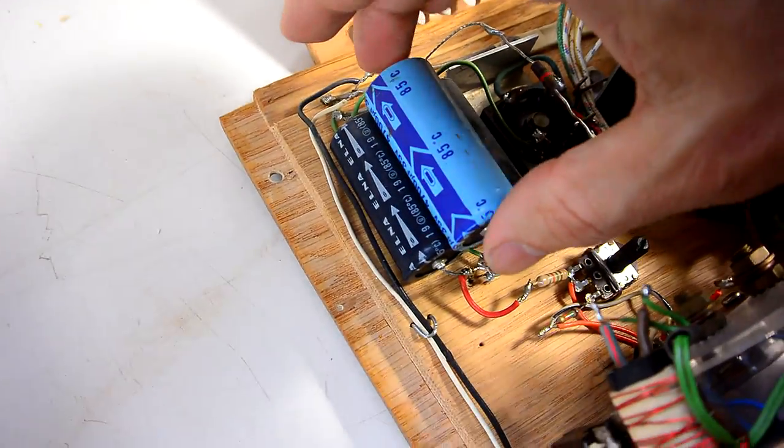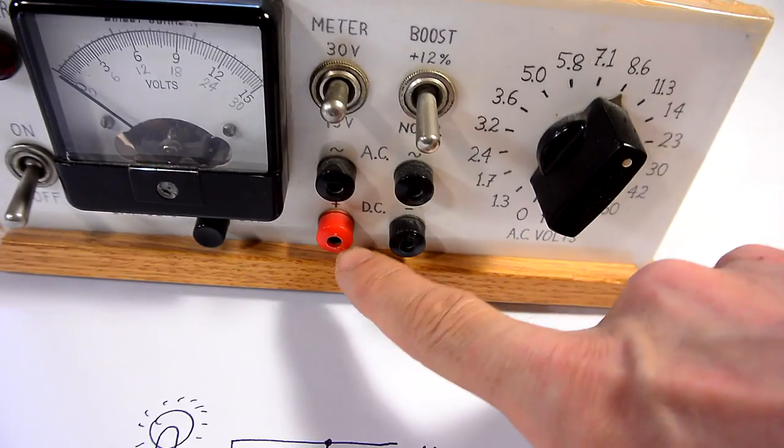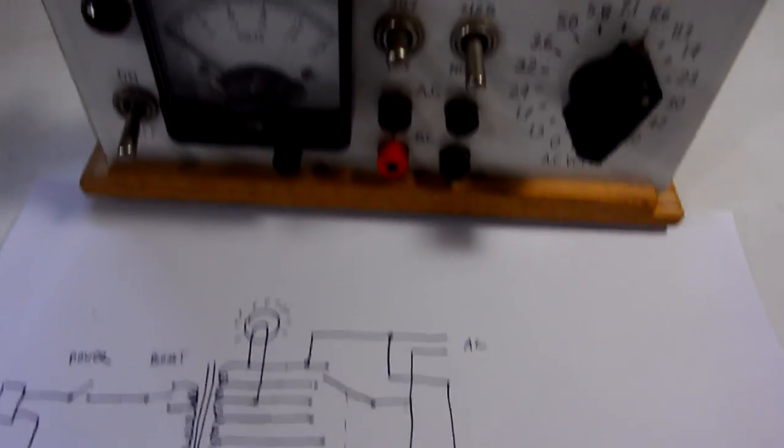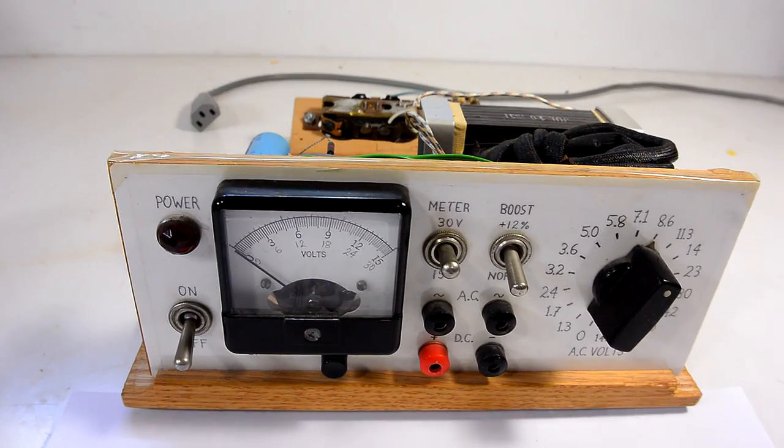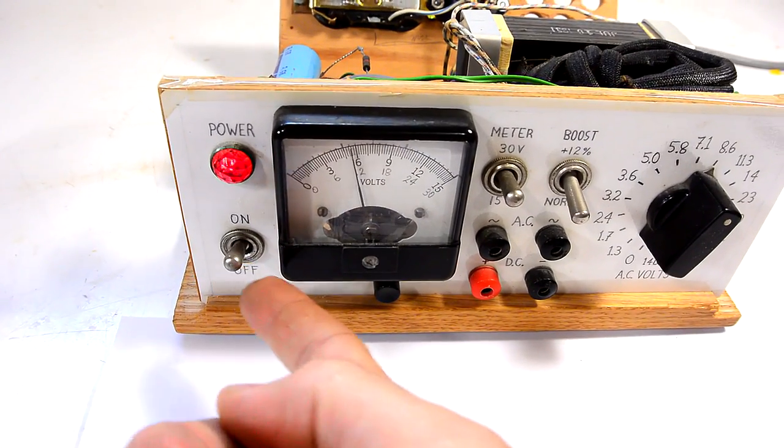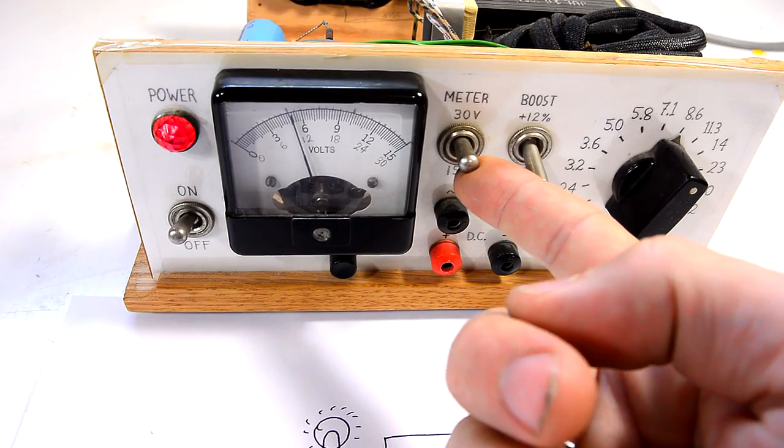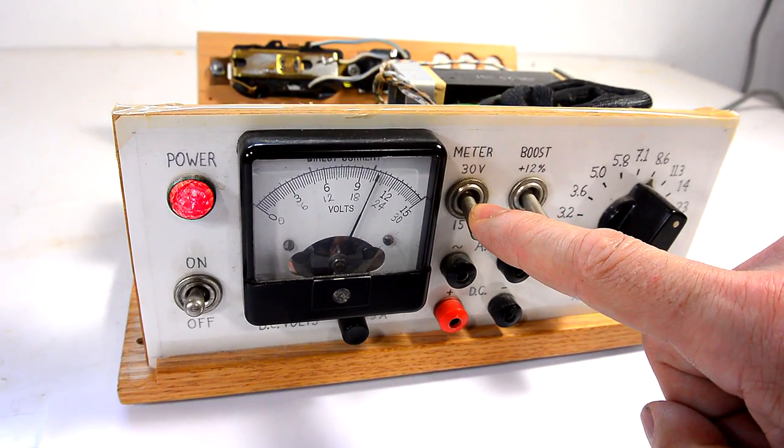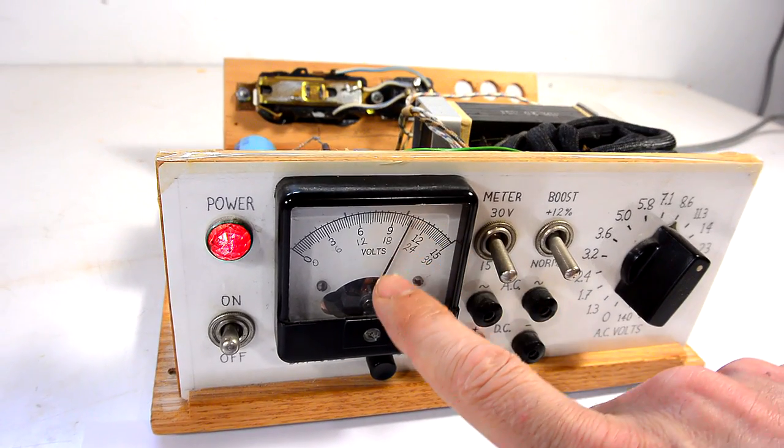From the terminals on this capacitor we go straight out to the DC terminals on front. But we also have the meter circuit because this thing can also show the voltage. Turning this thing on we can see the voltage here, and right now it's in the 30 volt range but it also has a 15 volt range for showing lower voltages more precisely.